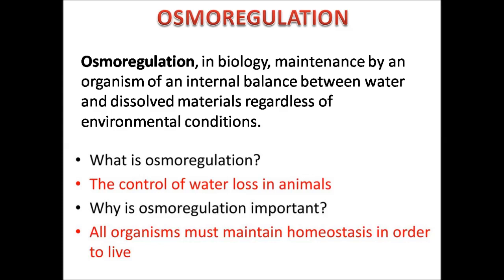Now we need to know what osmoregulation is. Osmoregulation, in biology, is the maintenance by an organism of an internal balance between water and dissolved materials regardless of environmental conditions. Basically it is the control of water loss in animals. The amount of urine we excrete must be balanced by the water we take in every day. For example, if we consume about three liters and excrete about 1.5 liters, we should hydrate our body accordingly.